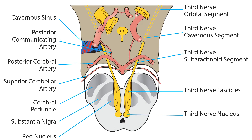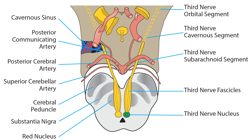You are looking at the course of the third cranial nerve. Its nucleus lies in the midbrain. Its fascicles travel ventrally to exit the brainstem in the interpeduncular fossa, traveling rostrally as a solid nerve in the subarachnoid space. When it reaches the posterior clinoid process, it pierces the dura to enter the cavernous sinus and then the orbit via the superior orbital fissure.